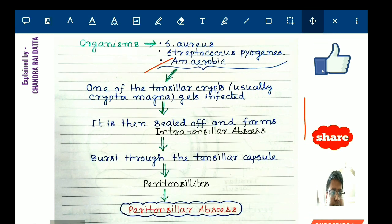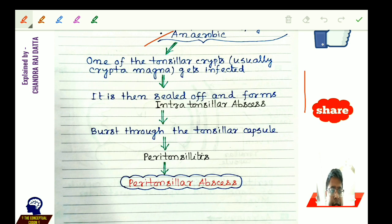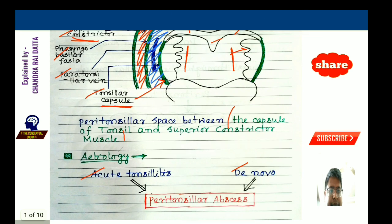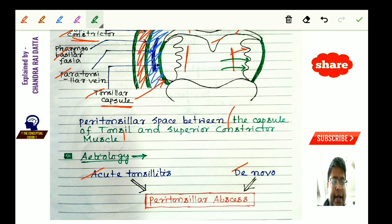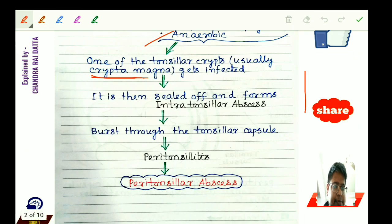These organisms — Staphylococcus, Streptococcus, and anaerobes — infect one of the tonsillar crypts, usually the larger one called the crypta magna, which then gets sealed off. The infection forms an abscess inside the tonsil, called an intratonsillar abscess.